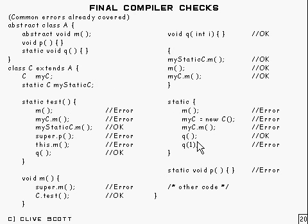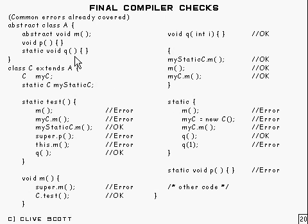Q by itself — let's have a look — that's OK, that's a static method. Q passing in 1 is going to try and call that one — you can't, because it's an instance method.